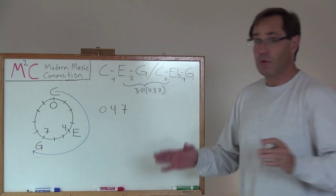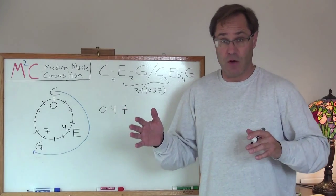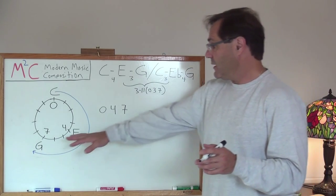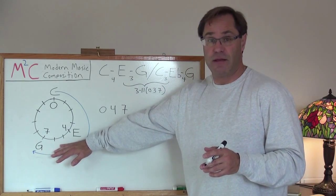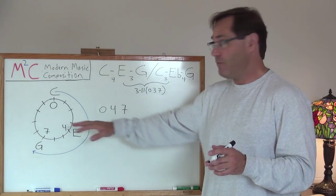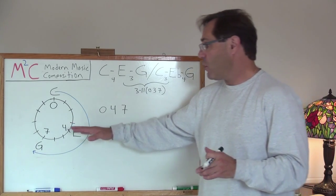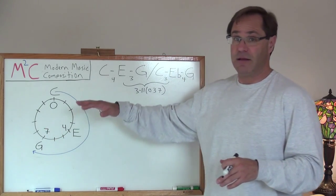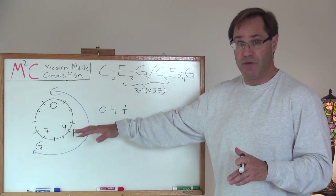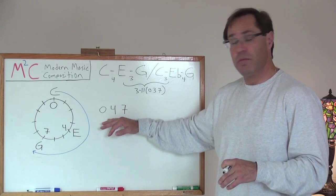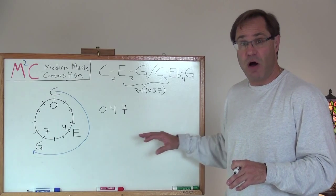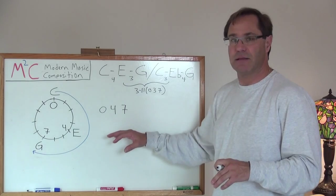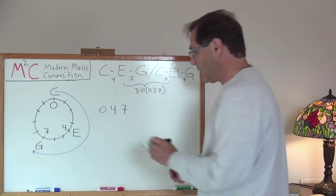Well, we don't really know if that's prime form. To calculate the prime form, what we really want to do is to take what we've now just created normal form for this major triad. We're going to invert this graph and then calculate the normal form of that inversion and compare that with this form and see which one is most compact to the left.